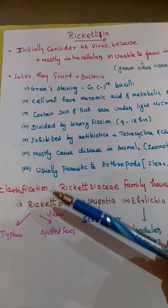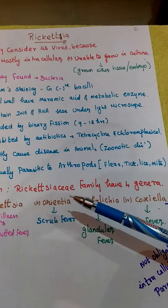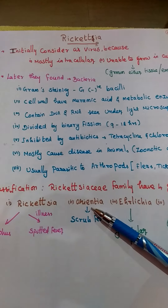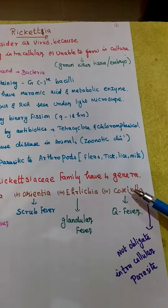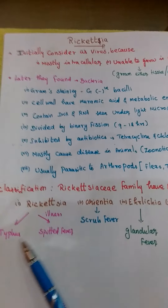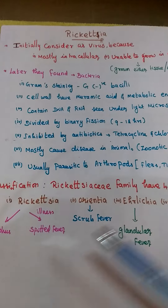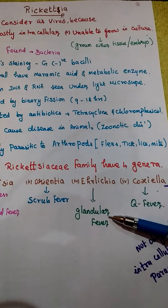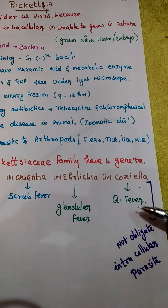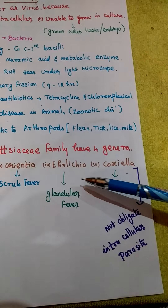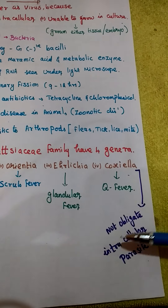The rickettsia family has 4 genera: Rickettsia, Orientia, Ehrlichia, and Coxiella. Rickettsia causes two typhus illnesses — typhus and spotted fever. Orientia causes scrub fever, Ehrlichia causes glandular fever, and Coxiella causes Q fever. The remaining three are obligate intracellular parasites, but Coxiella is not an obligate intracellular parasite.